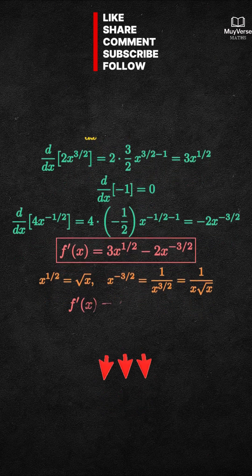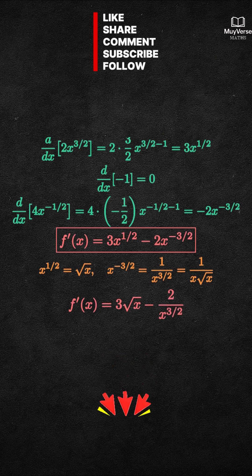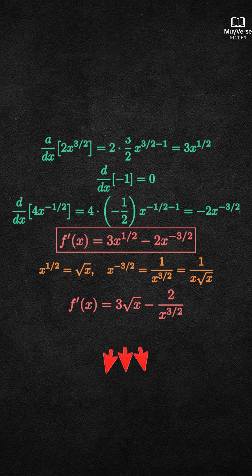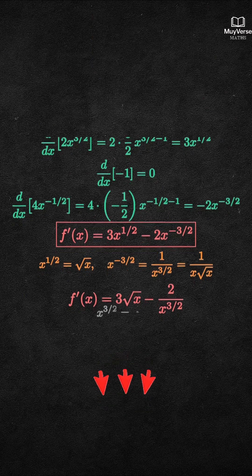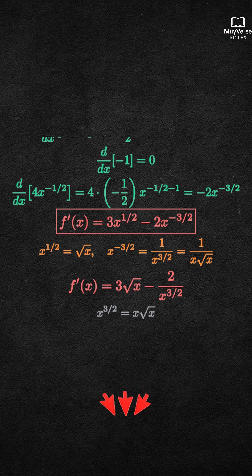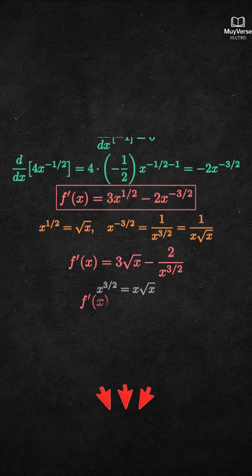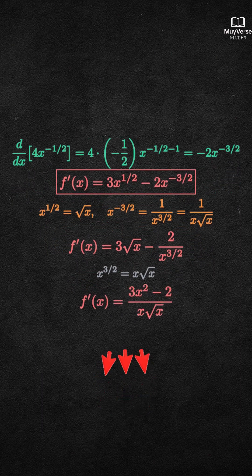Step 4: Present a single fraction form with a common denominator. The common denominator is x to the 3 halves, which is x times square root of x. Multiplying the first term appropriately and combining gives f prime of x equals the fraction with numerator 3x squared minus 2 and denominator x times square root of x. Because square root of x is in the original denominator, the domain is x greater than zero. Let's box the final answer.